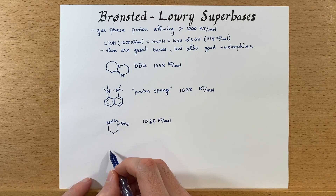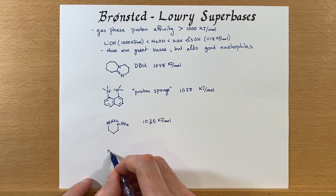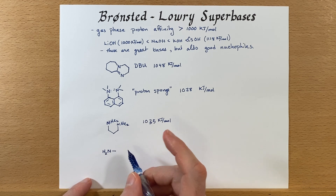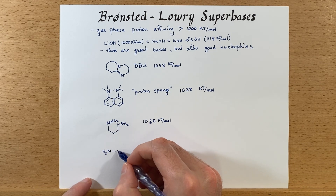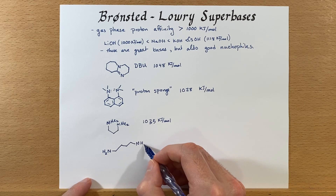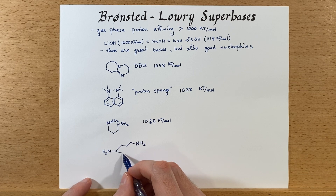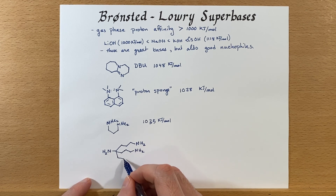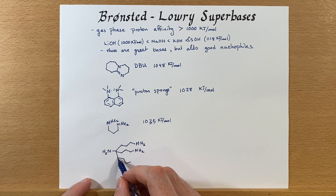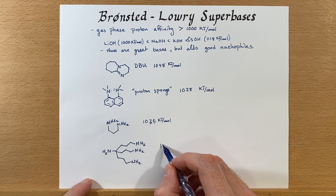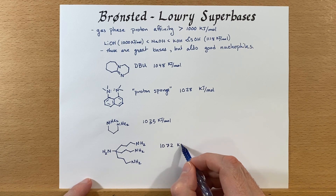I should mention there are other superbases — this is just a selection of them. I have one more to draw, and this one will take a little bit of time. It's 1,1,1-tris(1-aminopropyl)methylamine. So here's the amine and the methyl group, and then we need to draw all three 1-aminopropyl groups — one, two, three — each with a nitrogen, and then repeat that. This one has a very high basicity at 1,072 kilojoules per mole.